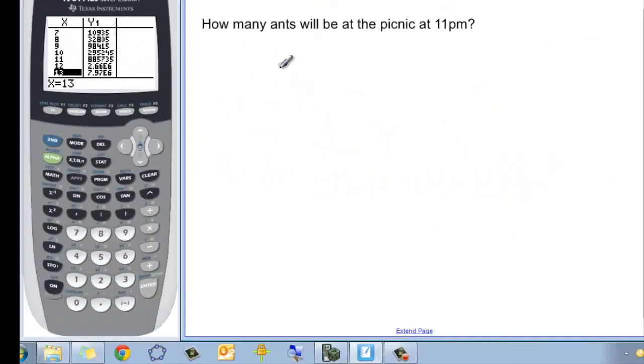So how many ants will there be at 11 p.m.? Well, that's a time, so we need to figure out how many hours since 11 a.m. has happened. If it's 11 p.m., that means that h is going to be equal to 12. So back to our formula. A, now we're going to look at for h to be the 12, is equal to the original five times three to the 12th.